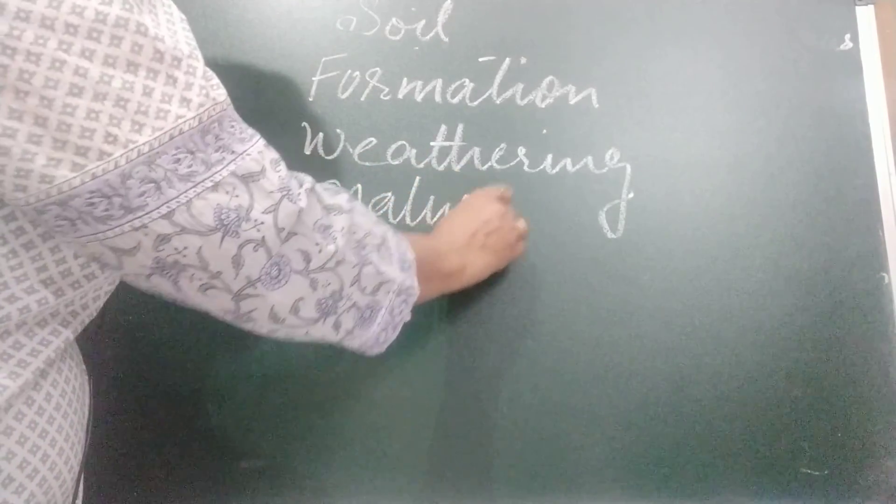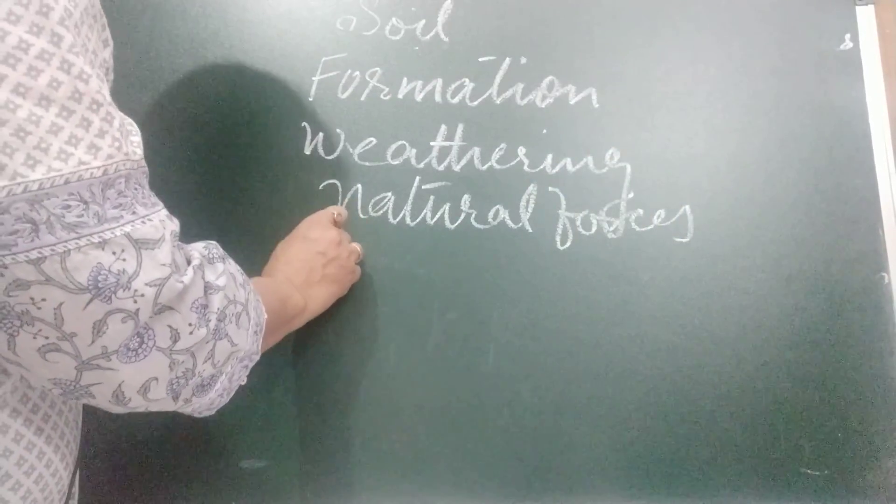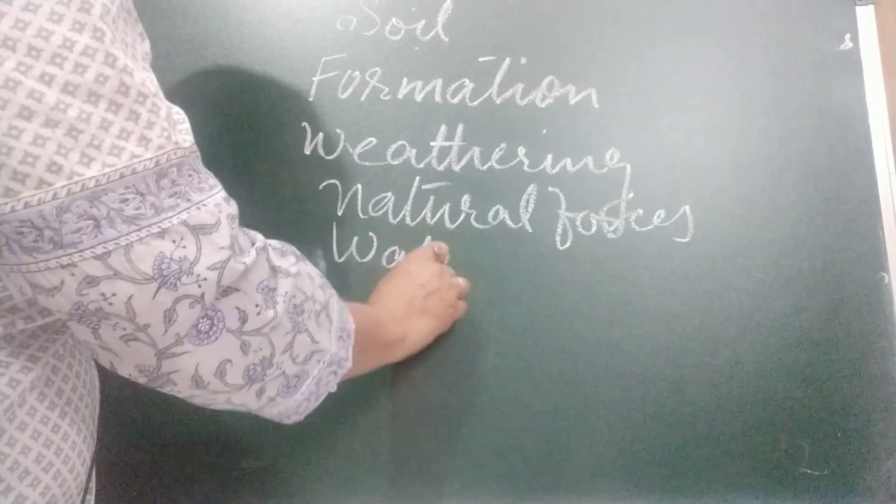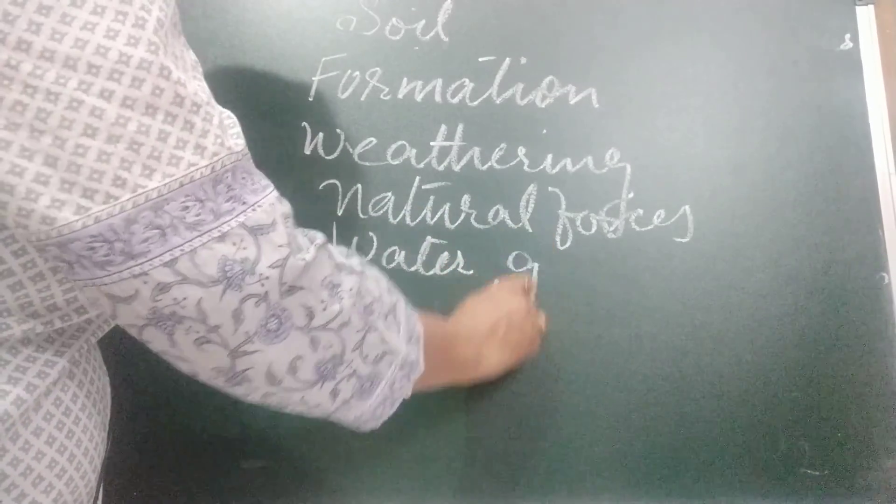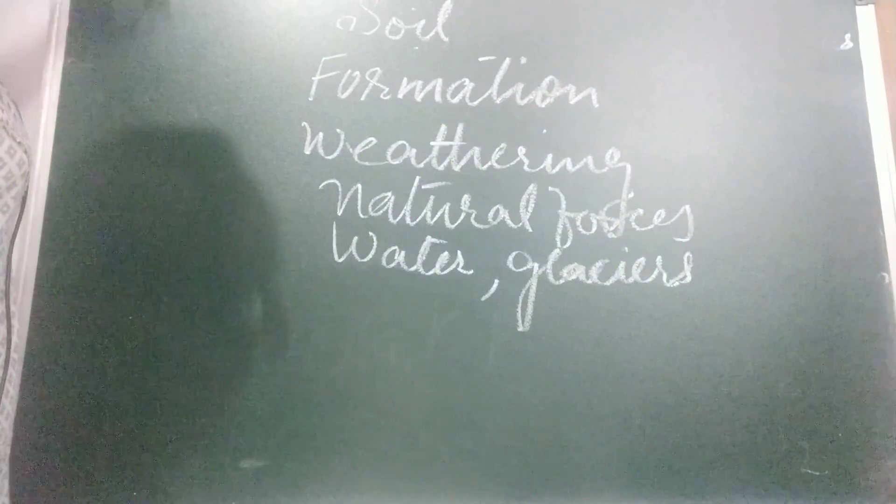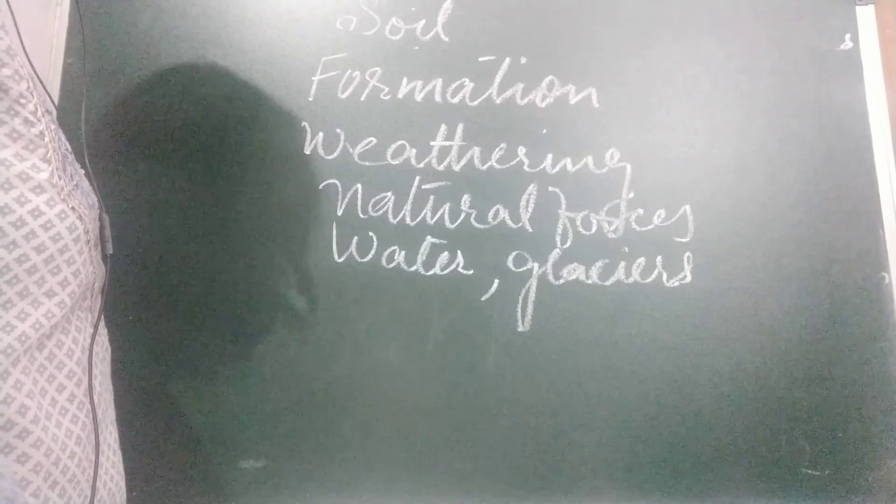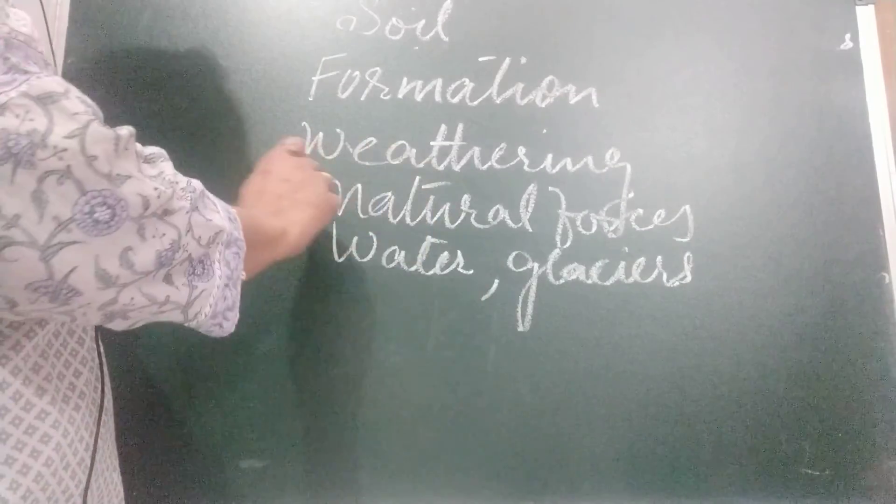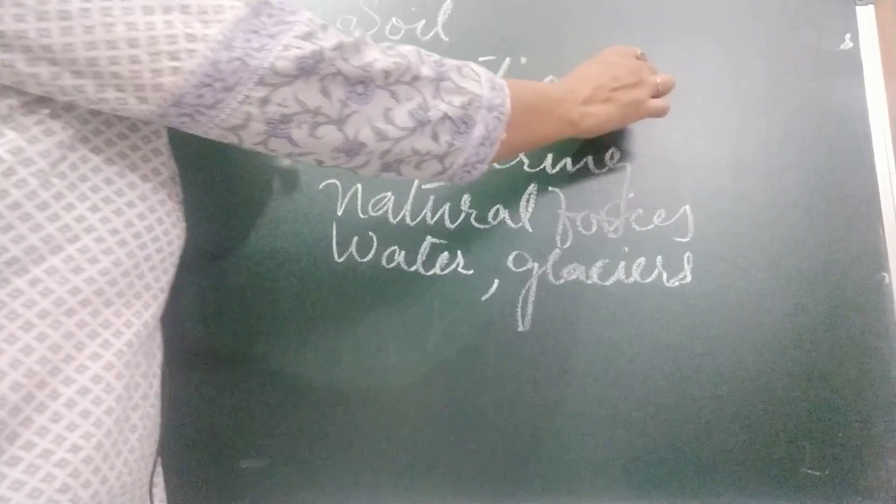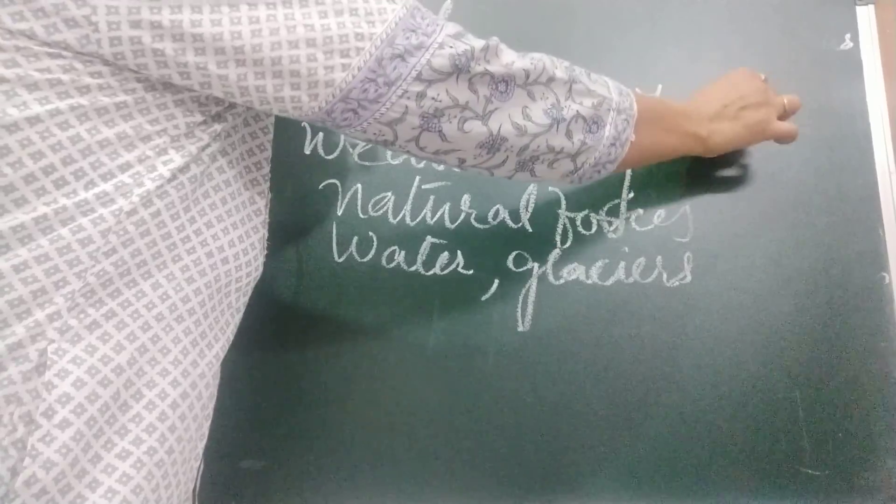Weathering is the breaking down of huge pieces of rocks into smaller pieces by the action of natural forces. Natural forces, what are those natural forces? Like water, glaciers, wind, roots of plants. So these are the natural forces which have been the formation of soil. And what do we call this process? Weathering.